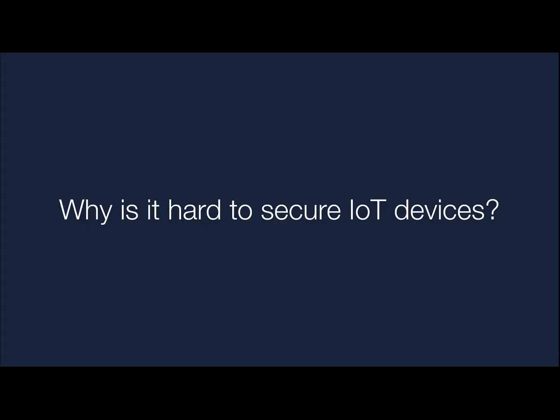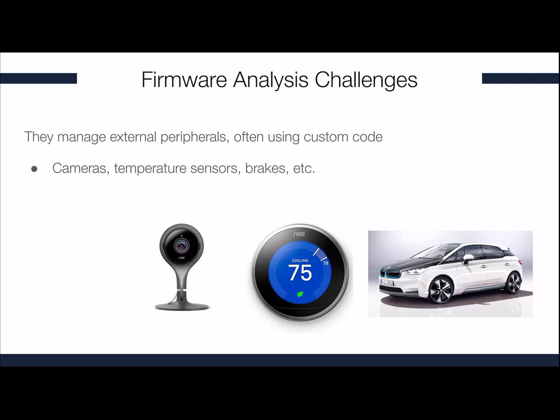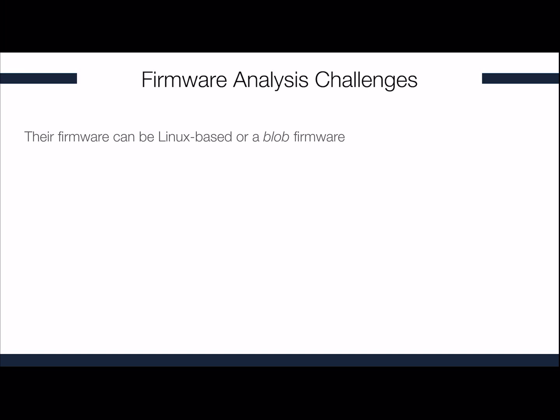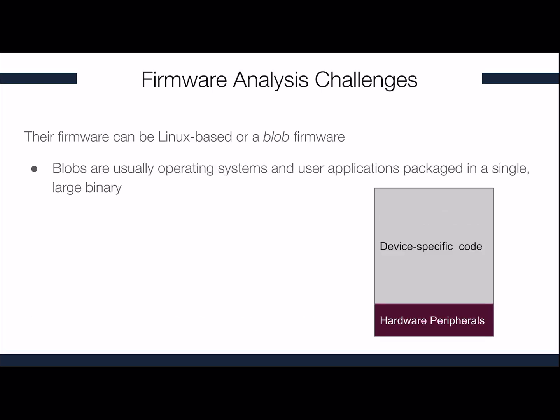So why is it hard to secure IoT devices? IoT devices are very diverse. They might mount very different architectures, for instance ARM, MIPS, x86, and so forth, and sometimes these architectures are even proprietary. Also, IoT devices manage external peripherals which usually use custom code. The firmware in IoT devices can be Linux-based or a blob firmware. Linux-based firmware are by far the most common — studies show that 86% of firmware are based on Linux. On the other hand, blobs are usually operating systems and user applications packaged together in a single large binary.